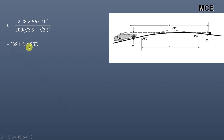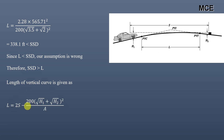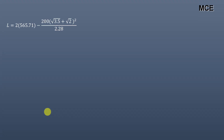However, this value of 338.1 feet is less than the SSD of 565.71 feet. We assumed L would be greater than SSD, but in fact it is less — so our assumption is wrong. This means L is less than SSD. We now assume SSD is greater than L and use the alternative AASHTO formula: L = 2S − 200·(√h1 + √h2)² / A. Substituting: L = 2×565.71 − 200×(√3.5 + √2)² / 2.28 = 184.8 feet. Since 184.8 feet is less than SSD, this assumption is correct.